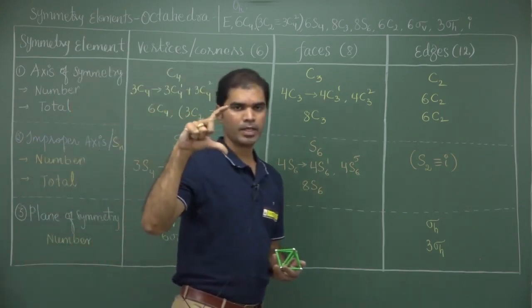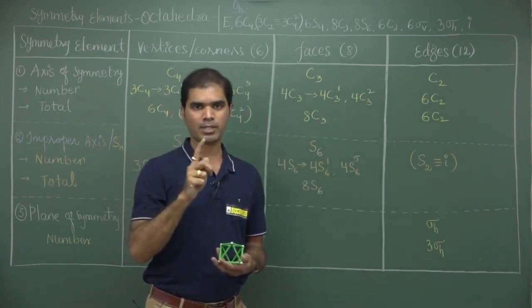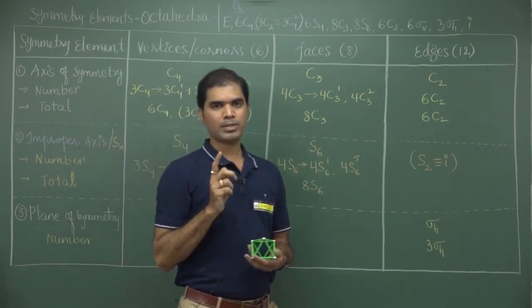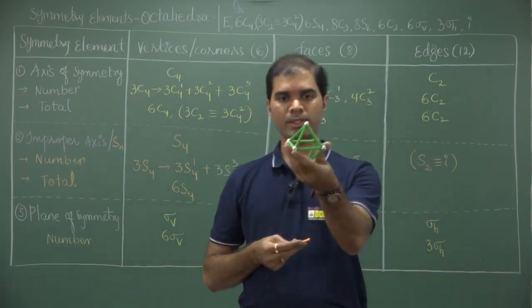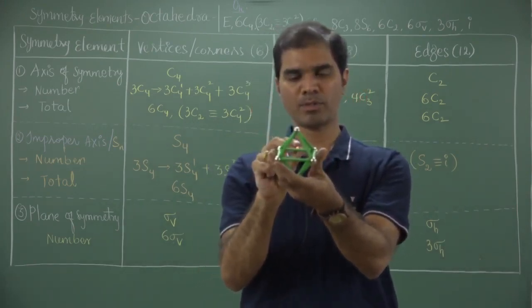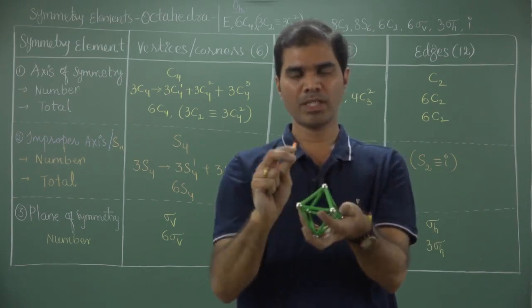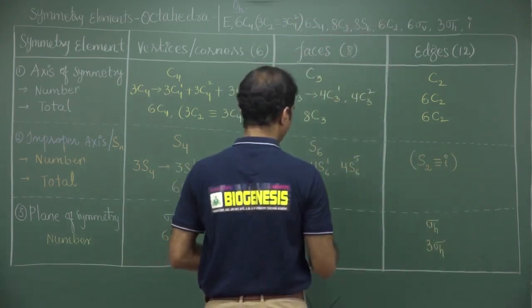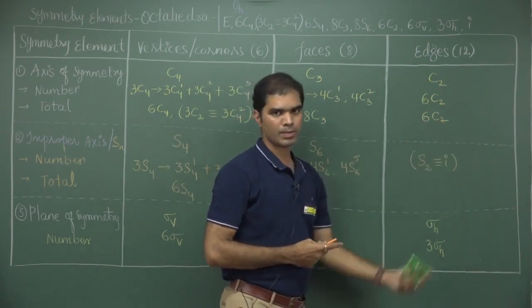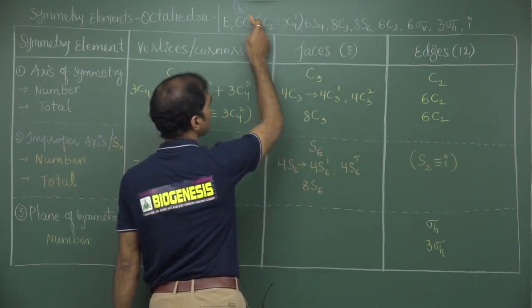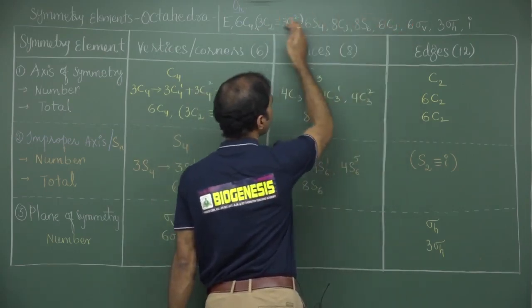To summarize progress: starting with vertices, C4 was generated. C4 also generates C2s, and S4 is collinear to C4 — so C4, C2, and S4 are completed. Through opposite triangular faces, C3 is possible, and collinear to C3 is S6. Now come to edges: altogether there are 12 edges in 6 pairs. From each pair of opposite edges, one C2 is possible. With 6 pairs of edges, 6 C2s are possible. Each C2 generates only one element, giving 6 C2s total. This C2 through edges is different from the C2 through corners.